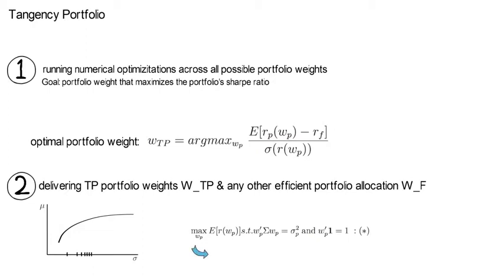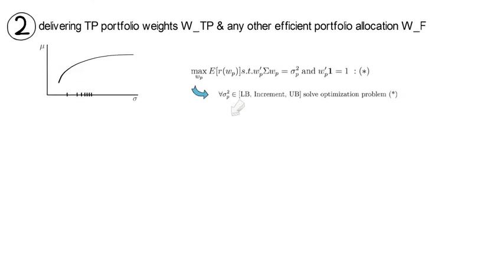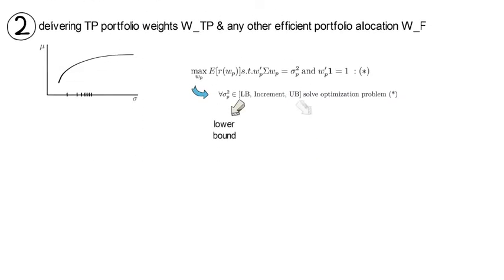Mathematically, it means that for all target risks sigma square p within the lower bound and upper bound, you're going to solve the previous optimization problem. And here Lb denotes the lower bound, Ub denotes the upper bound. An increment is the step size of the grid.